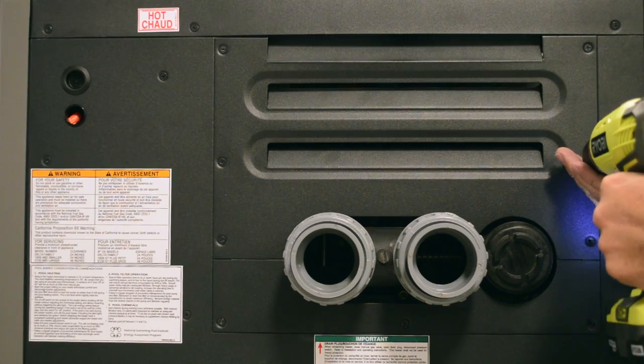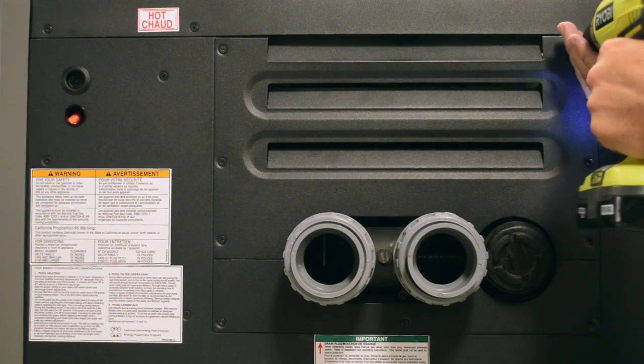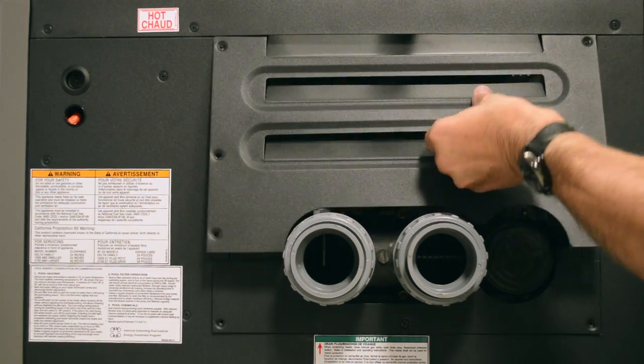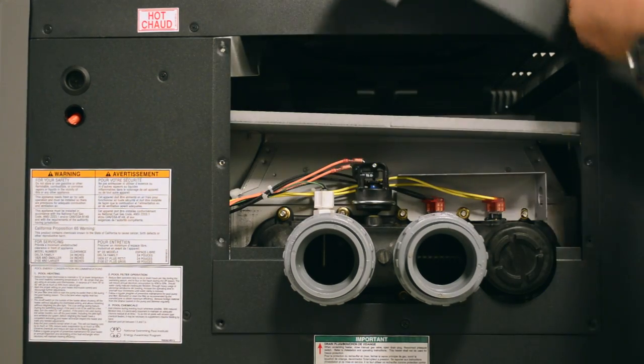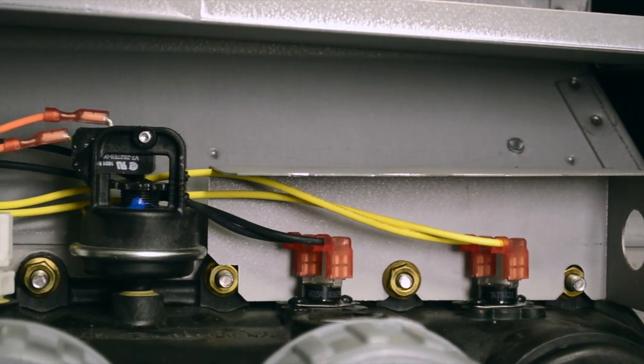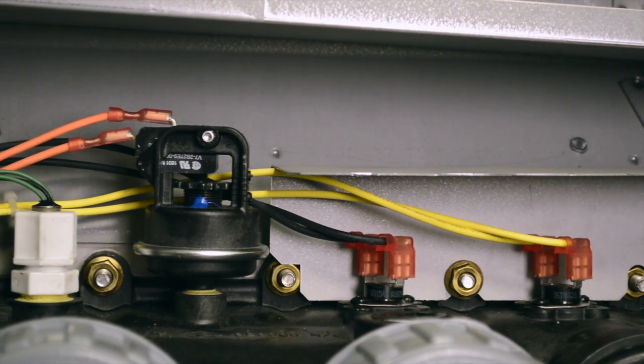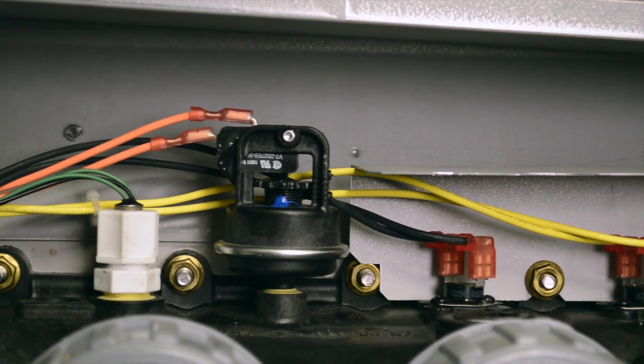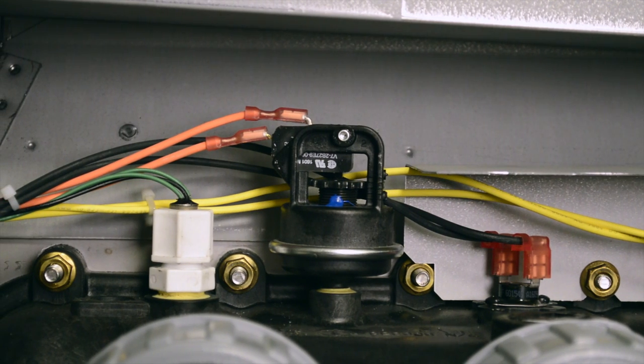Remove the screws holding the access panels located on the water connection side of the heater. Pull the access panels off and set them aside. Inspect the wires leading to the high limits, pressure switch, and temperature sensor. Make sure the wires are not melted, pinched, cut, or chewed.